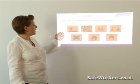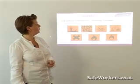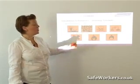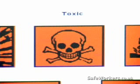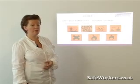This hazard label depicts an environmental hazard — it's pretty easy to understand: dead fish and a dead tree. This one is explosive. Skull and crossbones is a very familiar one and it means toxic. This one depicts corrosion, showing that the product the label is on is a corrosive product.